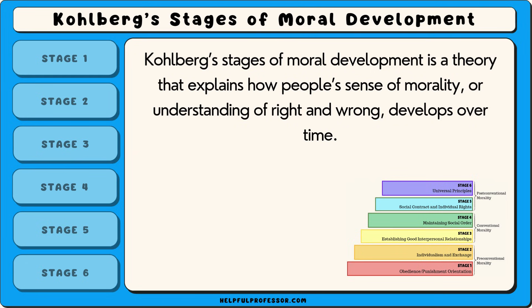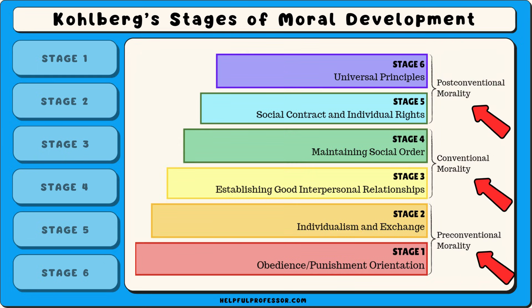Kohlberg's Stages of Moral Development is a theory that explains how people's sense of morality, or understanding of right and wrong, develops over time. The theory is divided into three levels, each containing two stages, making a total of six stages.